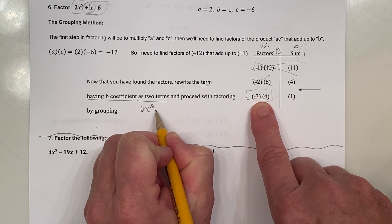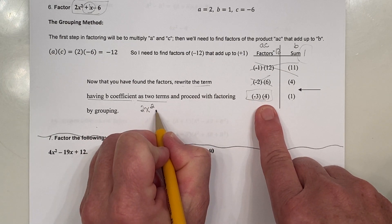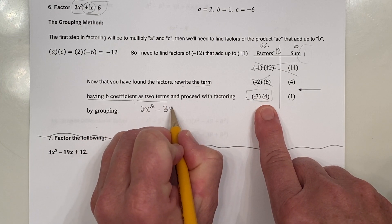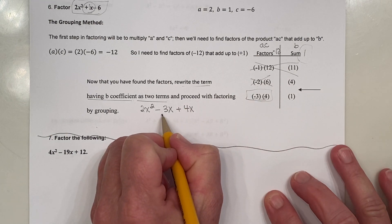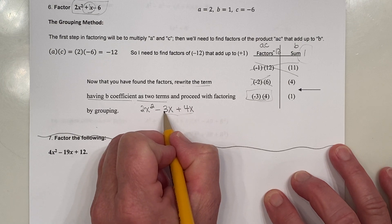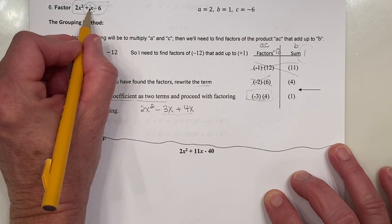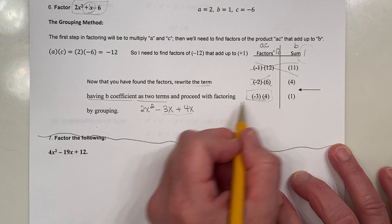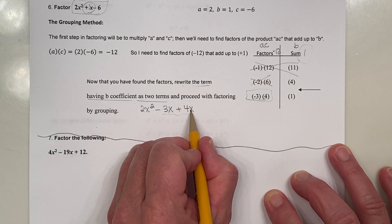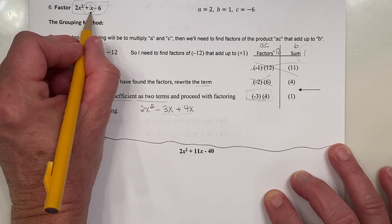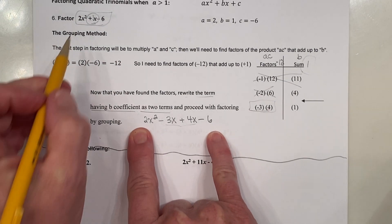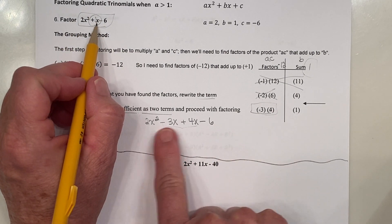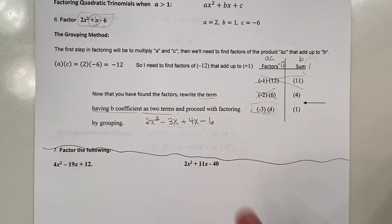We have an extra step — factoring by grouping. I take the middle term plus 1x and break it up into the sum of two terms with coefficients negative 3 and positive 4, giving minus 3x plus 4x. When you put these back together and combine them, you get back to the positive 1x. So we've taken the middle term and broken it into two terms, giving us four terms total — which is exactly what we need for factoring by grouping.